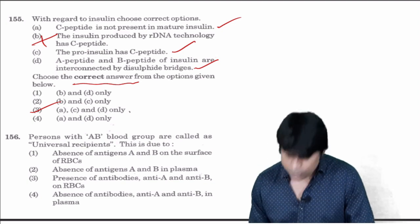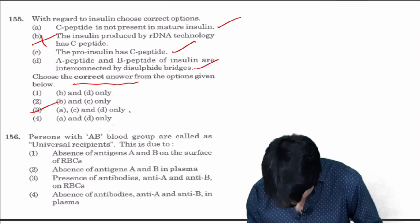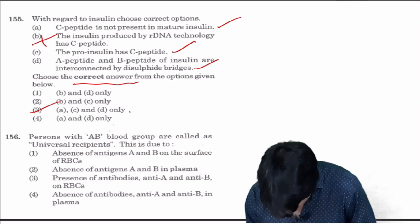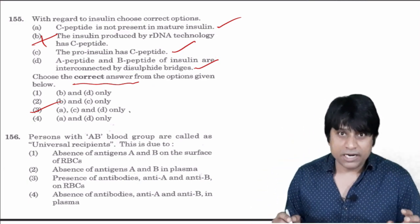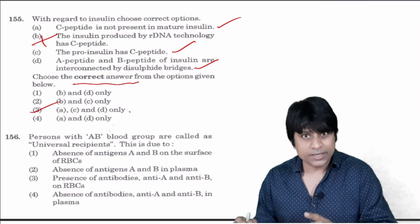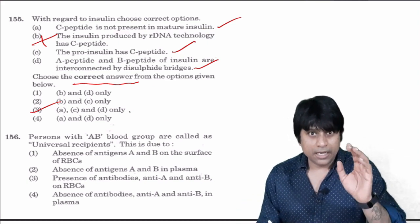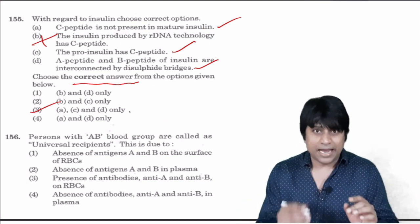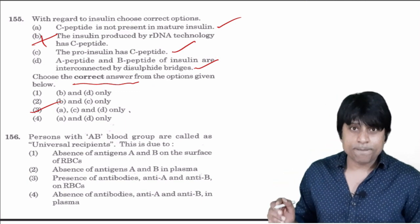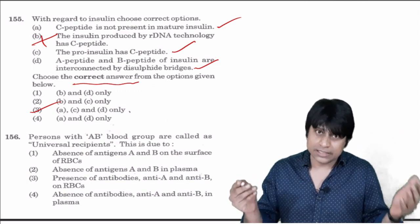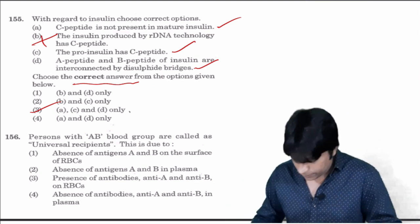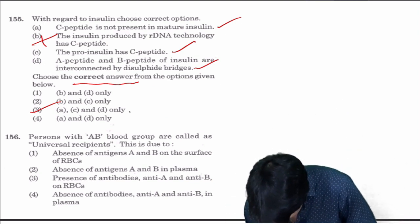Choose the correct answers except B, remaining all are correct, so your answer is A, C, D only. Next, a person with AB blood group are called universal recipient because AB blood group individuals have both antigen A and antigen B but they do not have antibodies in the plasma of their blood.